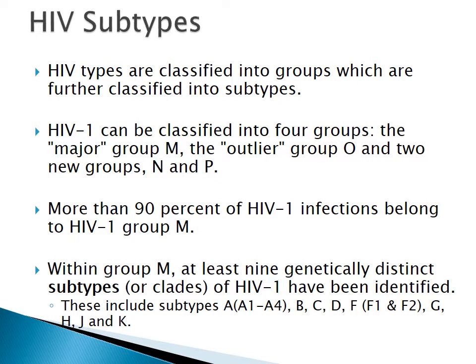More than 90% of HIV infections belong to Group M. Within Group M, there are at least nine genetically distinct subtypes: A (with sub-subtypes A1, A2, A3, A4), B, D, F (with F1 and F2), G, H, J, and K. Subtype E was previously listed but was later discovered to be a recombinant form and removed from the list.